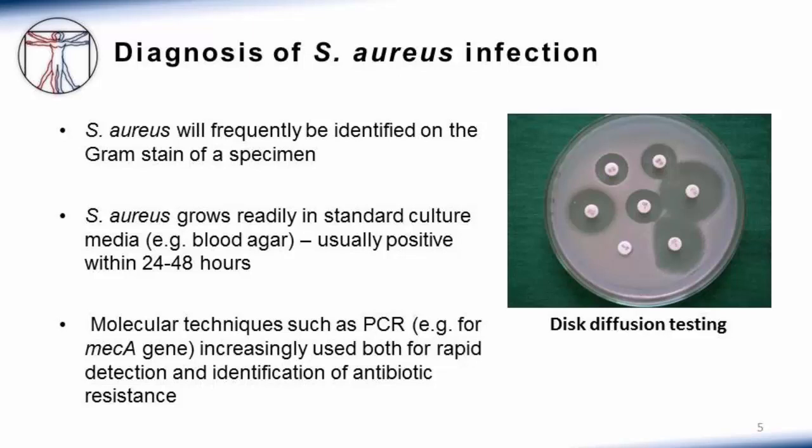These are more traditional culture and testing methods. Newer molecular techniques such as PCR for the mecA gene are increasingly used for both rapid detection and identification of antibiotic resistance. For example, if a blood culture flags positive on an automated detection machine, a technologist may remove it, look at a gram stain, see gram positive cocci in clusters, and then do a PCR for the mecA gene to more rapidly establish whether this is staph aureus and whether it has methicillin resistance.